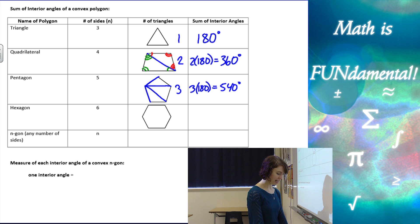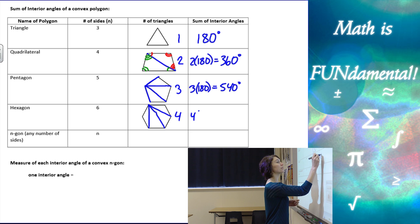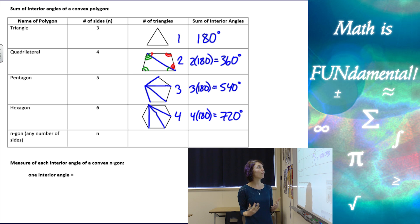And then in a hexagon, we have six sides. Again, I can take a vertex and connect it to the other vertices, creating four triangles. So four times 180 degrees will give me 720 degrees. These are just a few examples. Hopefully by now you kind of see the pattern.